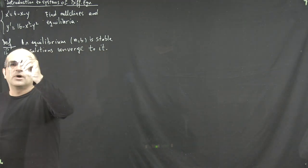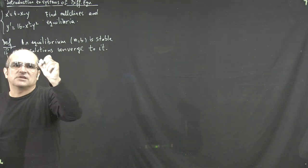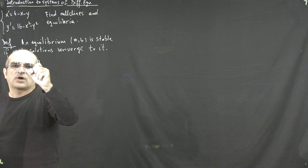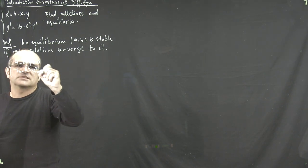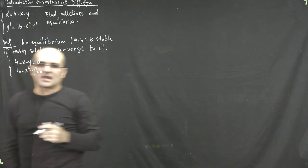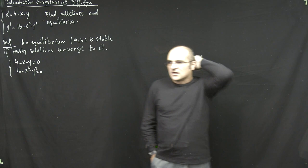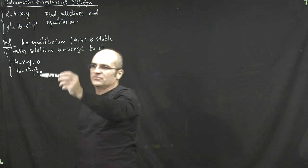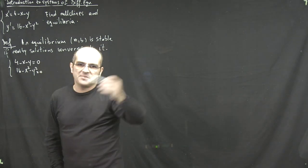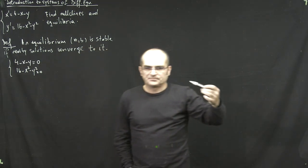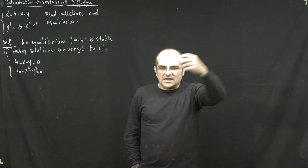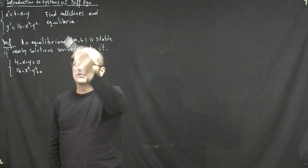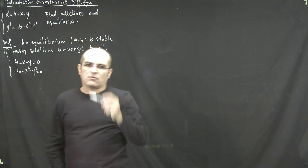The way to find equilibrium points is to set both equations equal to zero and find all values of x and y that satisfy the system. Remember, each equation, if plotted separately, gives a null line. Taken together as a system, if those curves intersect at any point, that intersection is an equilibrium point.